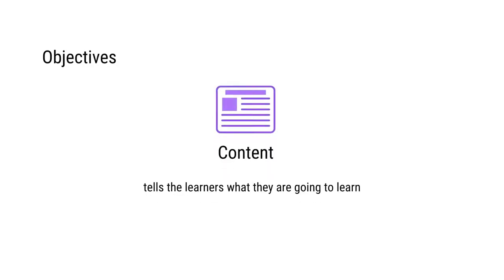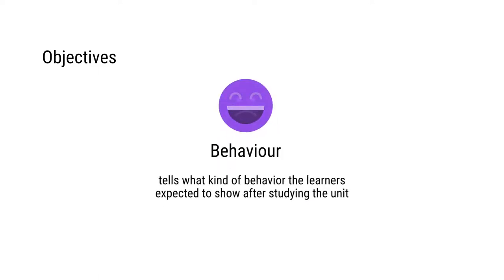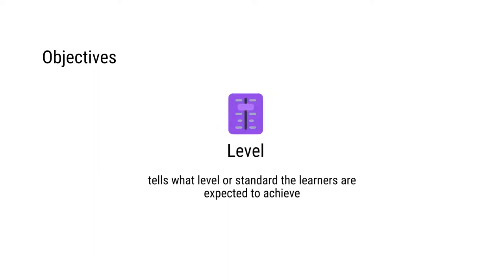Then we have the objectives. Objectives given at the beginning of the unit tell the learners what they are expected to perform, what they are expected to behave at the end of studying the unit. We have the objectives in three different layers: one is the content part — what the learners are expected to learn after they study the unit; then we have the behaviour part — what kind of behaviour they are expected to show after studying the unit; and third, the level part or standard part — what kind of level the learners are going to achieve after studying the unit.